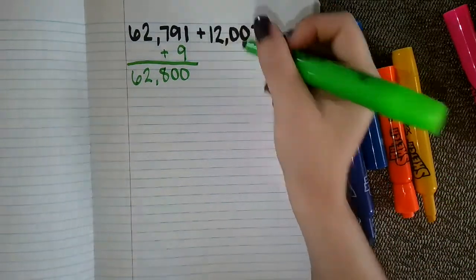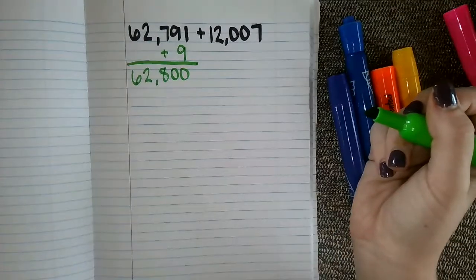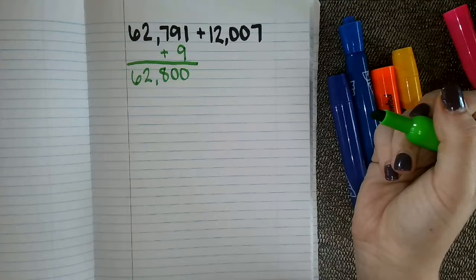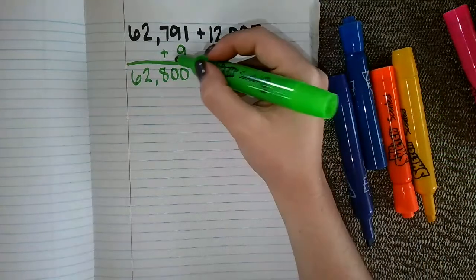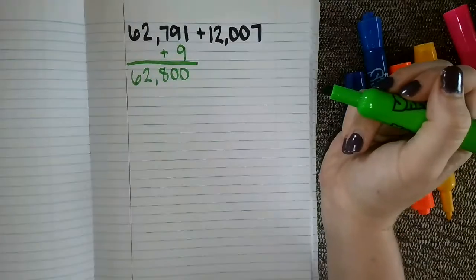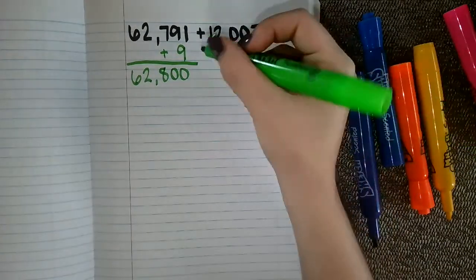Then I'm going to look at my second number 12,007 and I'm going to think, how could I get this to a friendly number? And I added on this one, if it so happened that you wanted to put this up to 12,010 by adding 3, you could do that.